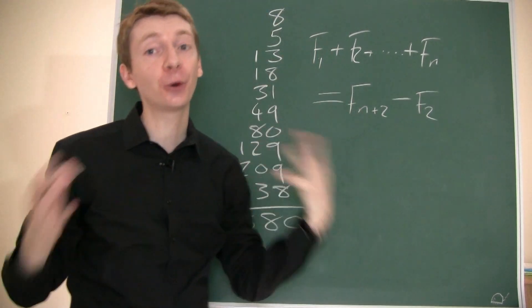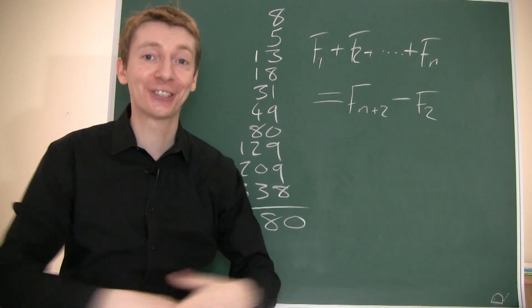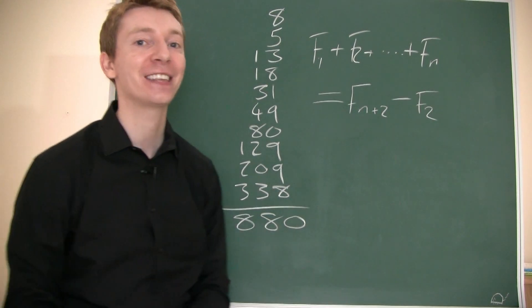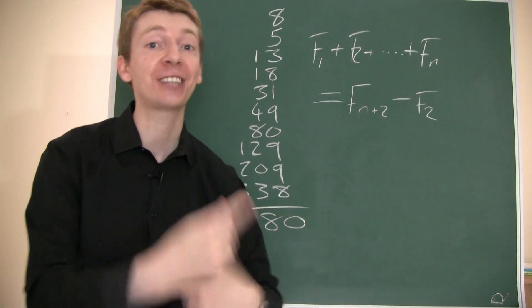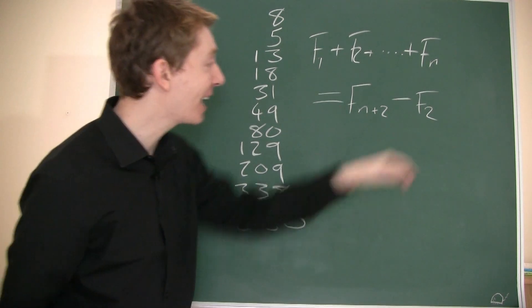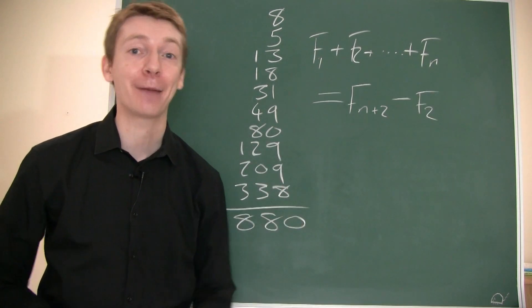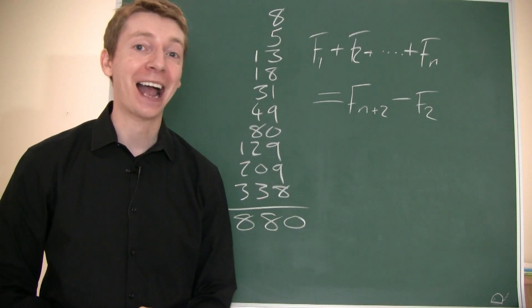So there we have a formula. In other words, if you wanted to work out the sum of the first n of these numbers, you just do a couple more steps. Do a couple more steps. And subtract the second step. And that is your answer.